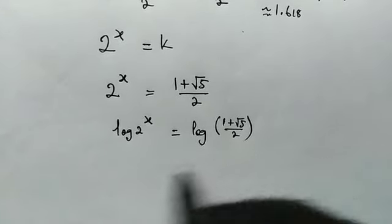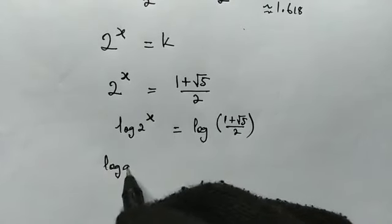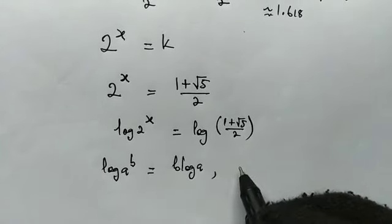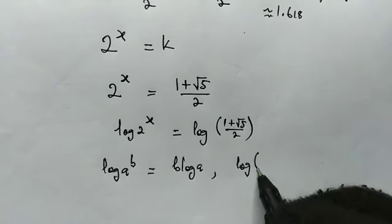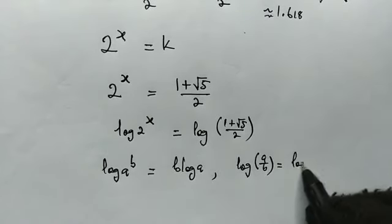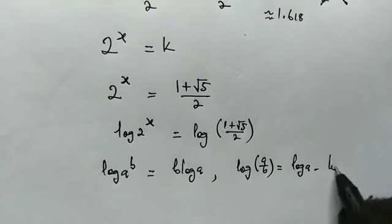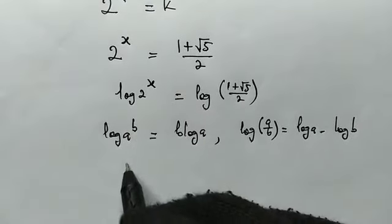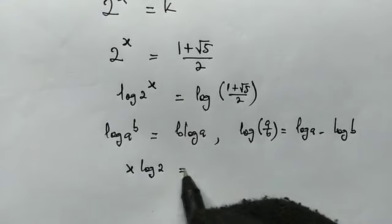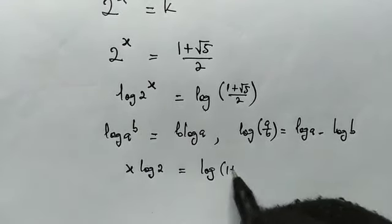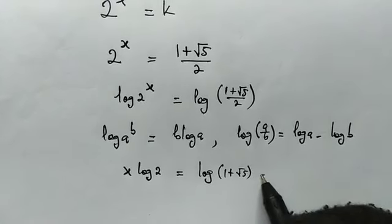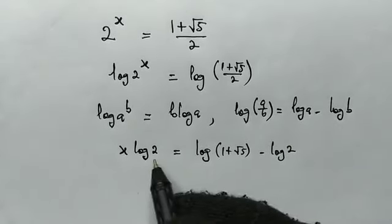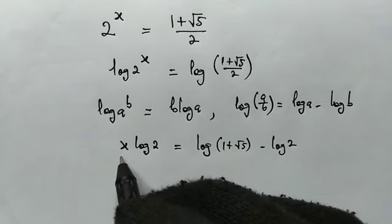Now let us take note of the following properties of logarithm. log(a^b) = b · log(a), and also log(a/b) = log(a) - log(b). So here, this power comes down, we'll get x · log(2) = log(1 + √5) - log(2). Remember our log here is in base 10. Now since we're solving for x, let's divide both sides by the coefficient of x.